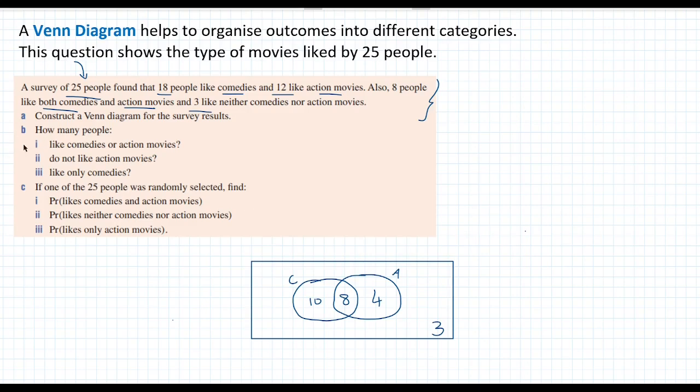So let's look at B. How many people like comedies or action movies? So this is going to be all the people inside the C circle and the A circle. So if we add that up, that's 10 plus 8 plus 4. So that's 22.